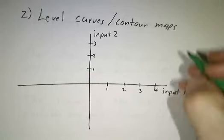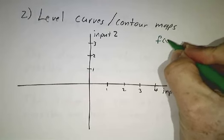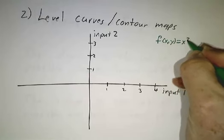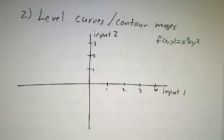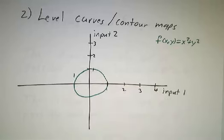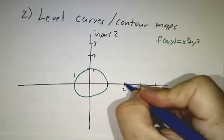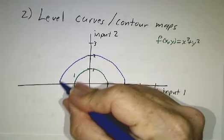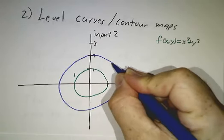So suppose we're looking at the function f equals x squared plus y squared. What we might do is we might draw a circle here and put a number one by it. And put a circle here and put the number four by it.